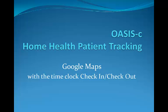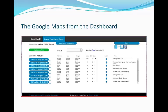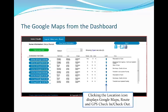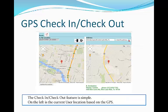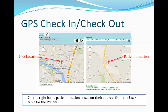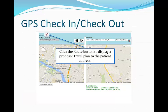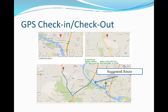Google Maps with a time clock check-in and check-out feature. Back in the nurse information page, there's a column with the location icon. These icons are in a row connected to the individual visits scheduled. If you click on this icon, it takes you to the check-in, check-out feature. This is your GPS location based on your computer location — it's going to be a tablet or an iPhone. This is the patient location based on their address entered into the system. If you click the route button at the top left corner, a suggested route will come up showing you how to get from where you are to where you're going.